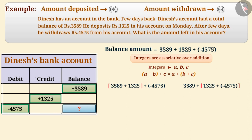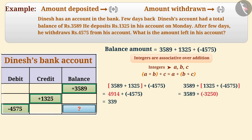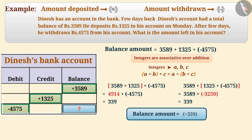If we make a group of 3,589 and 1,325 and solve this example, the result is 339. If we make a group of 1,325 and minus 4,575 and solve this, then also we will get the same result, that is 339. Therefore, the balance amount in Dinesh's bank account is represented by plus 339.